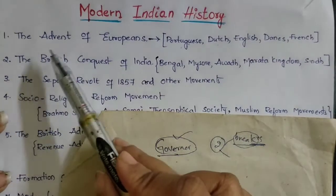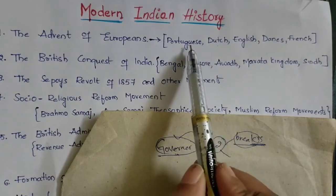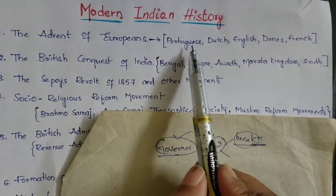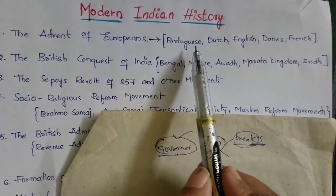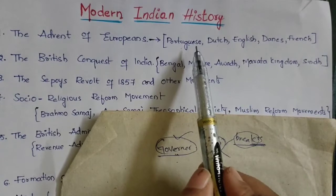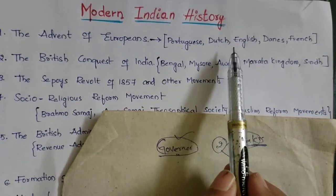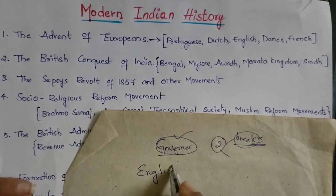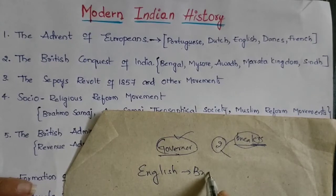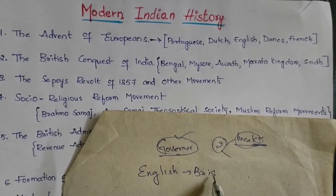We will find evidence of the Europeans arriving in India. The main group to arrive first were the Portuguese. After them, the English — or Britishers — became more predominant and gained more power and influence.